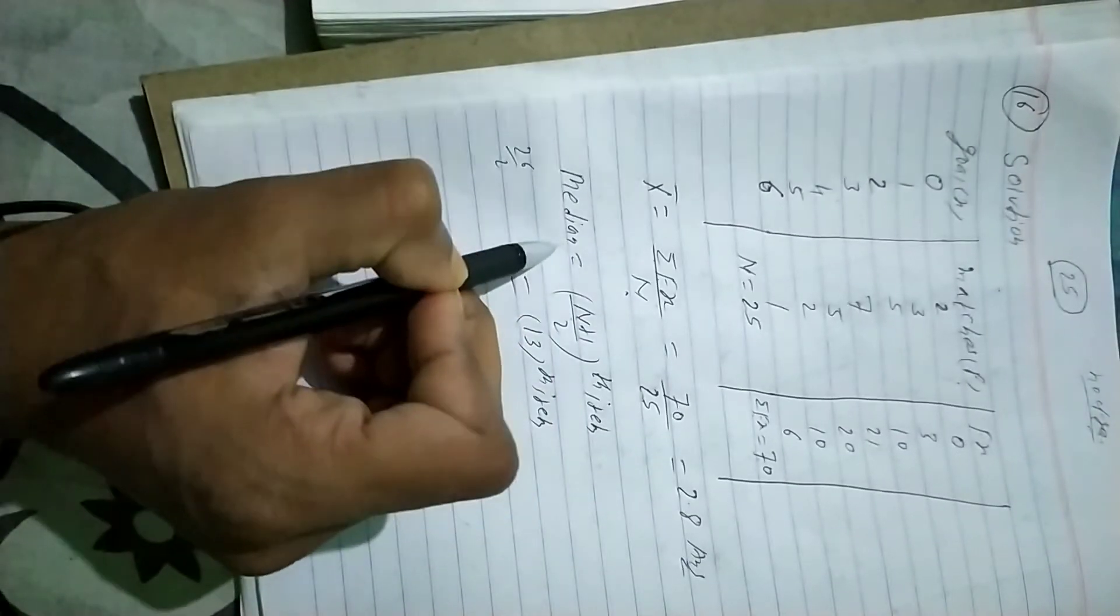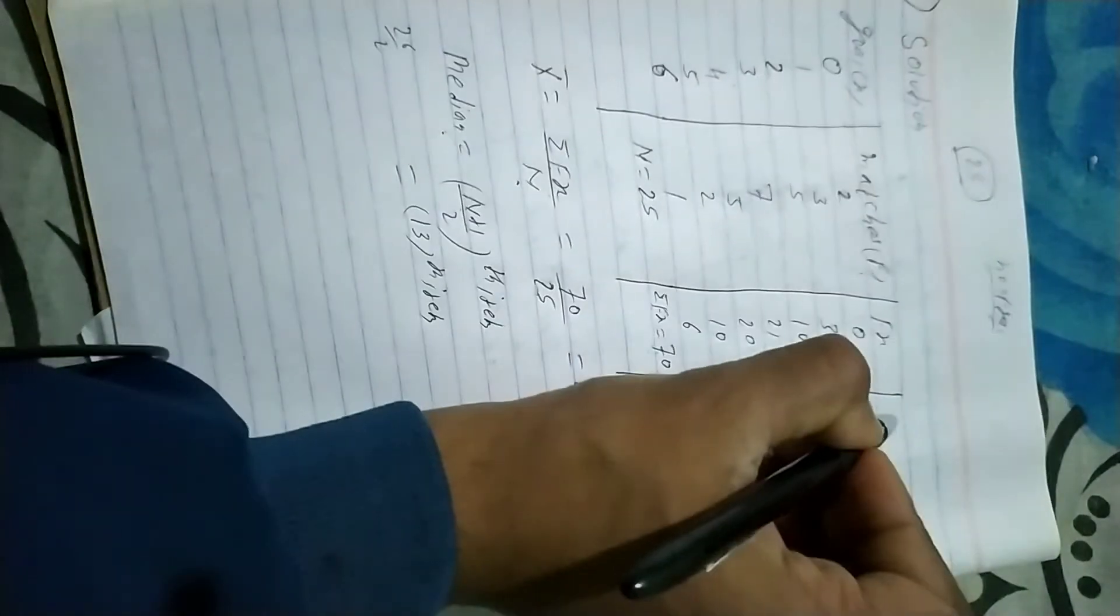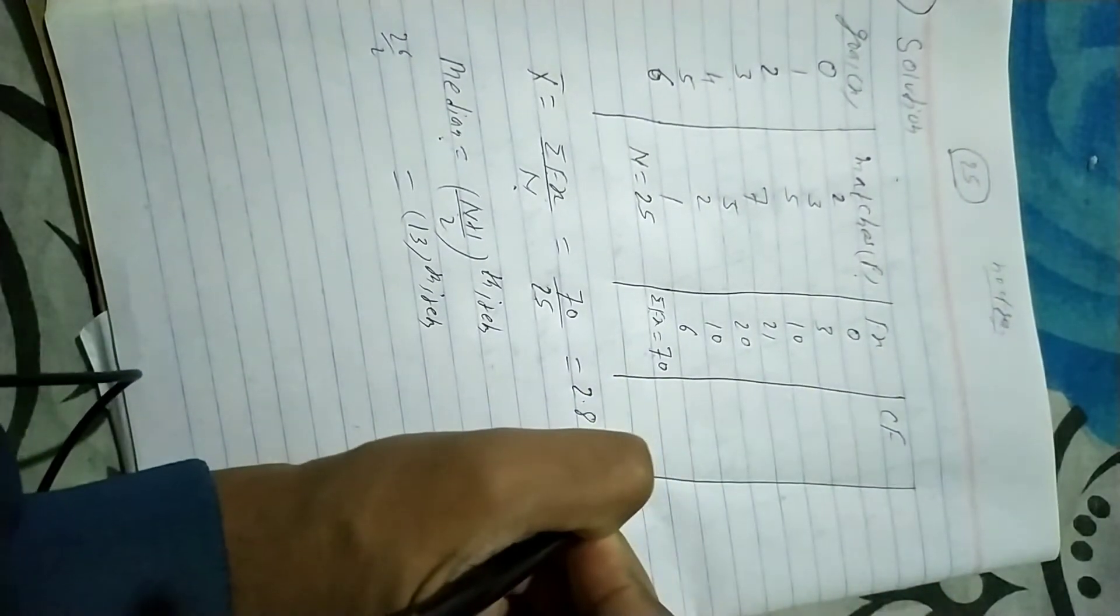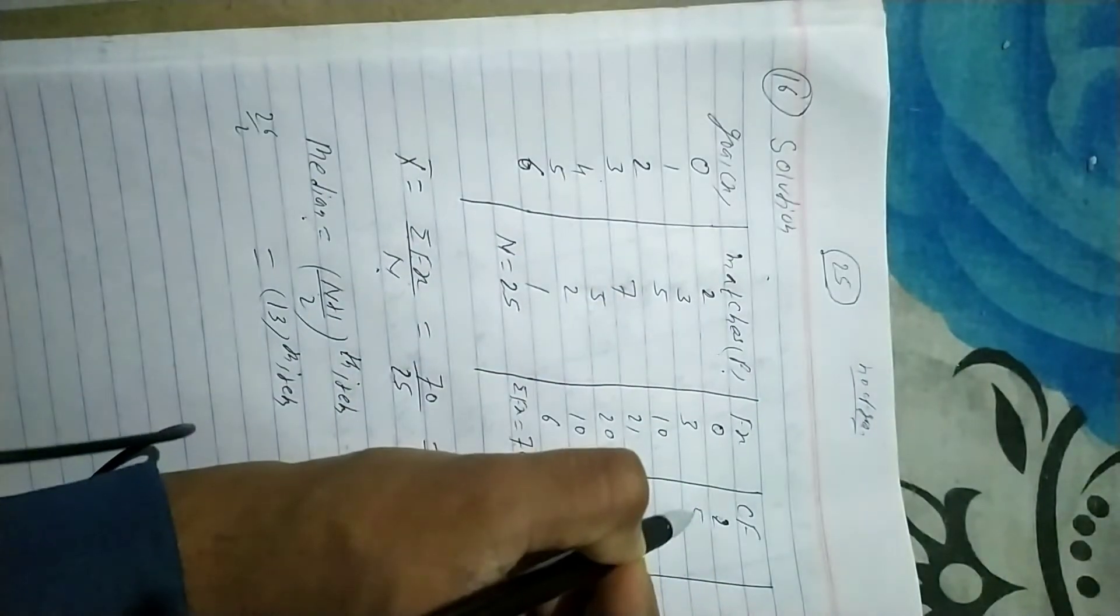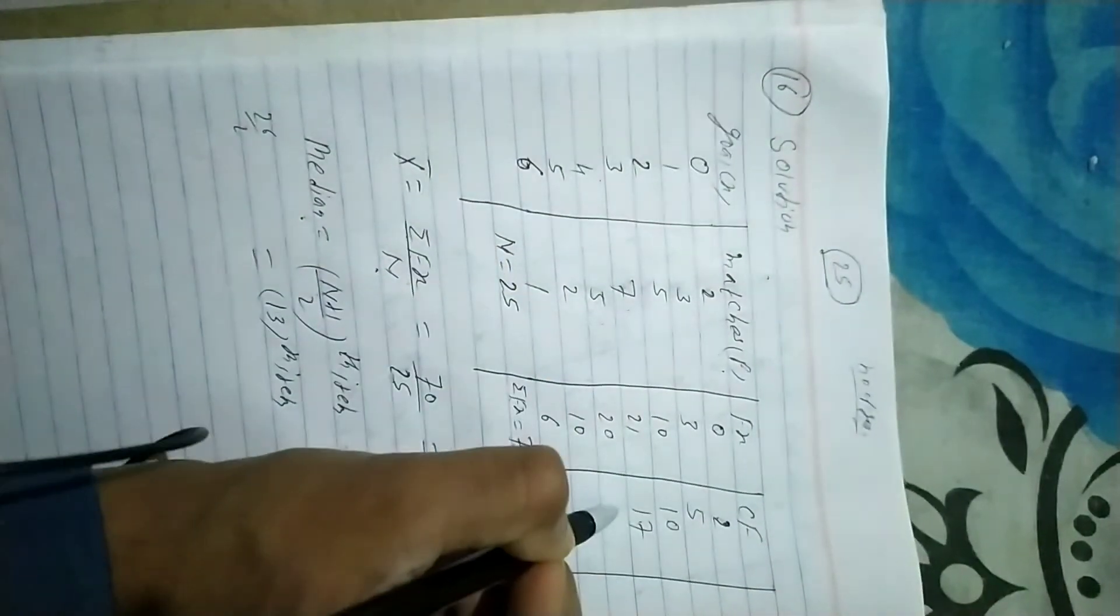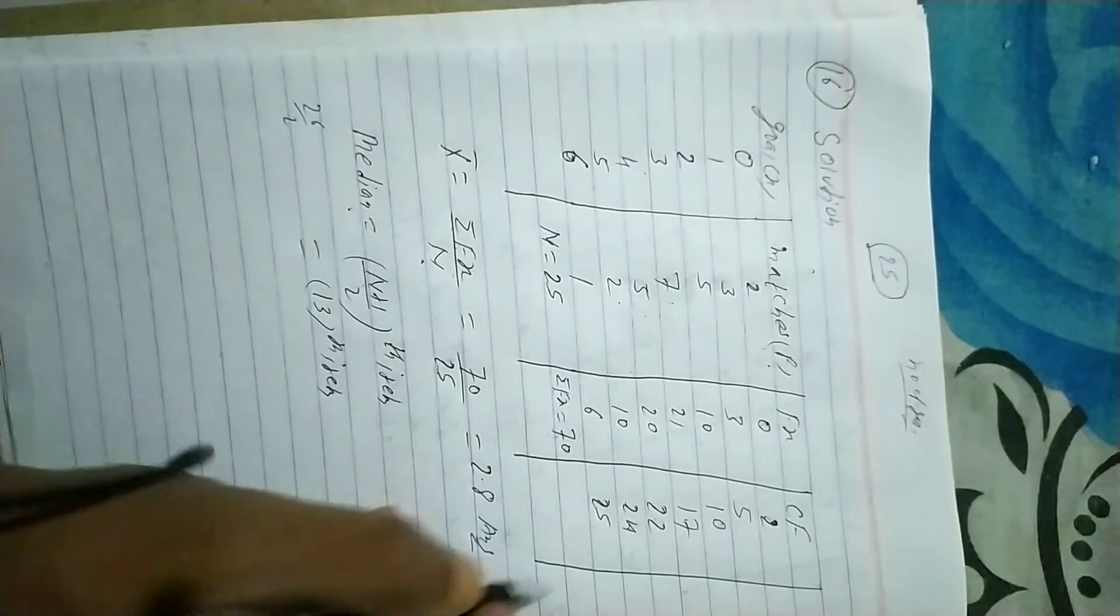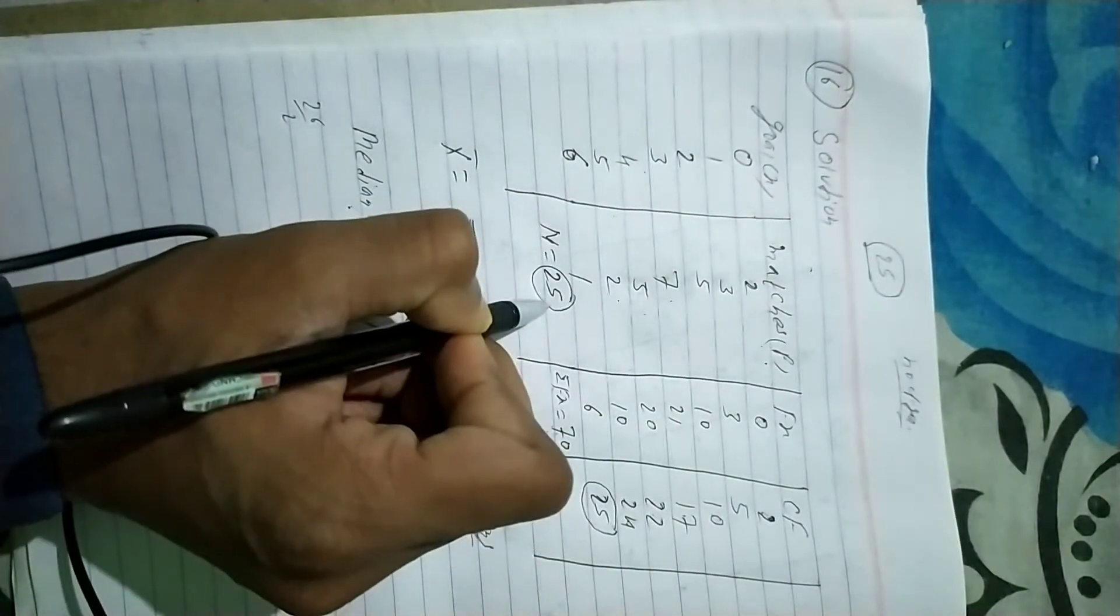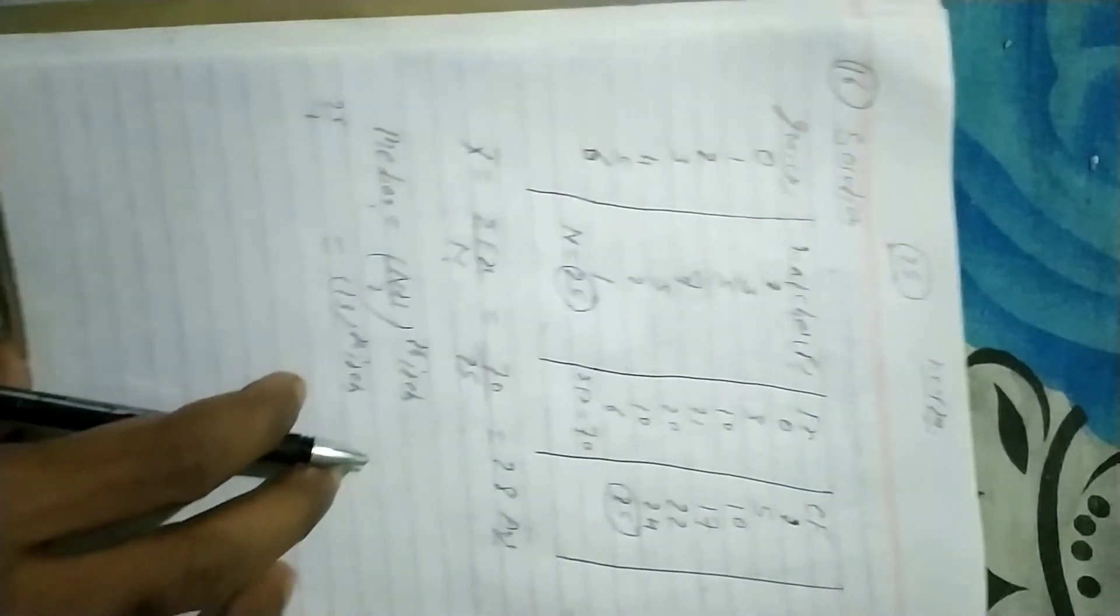To find the median in a discrete series, we must first find the cumulative frequency (CF). So we calculate: 2, then 2 plus 3 equals 5, then 5 plus 5 equals 10, then 10 plus 7 equals 17, and so on.